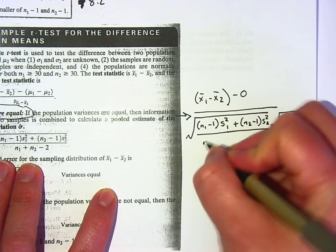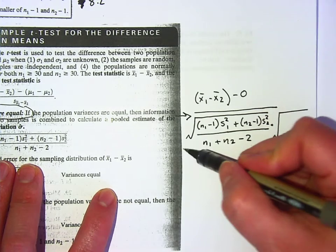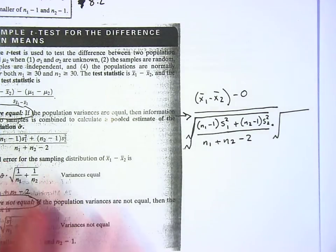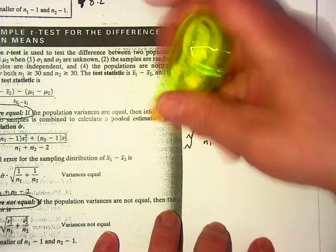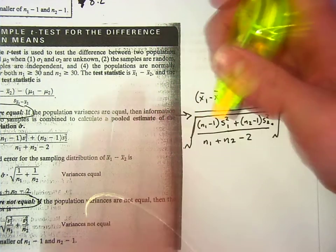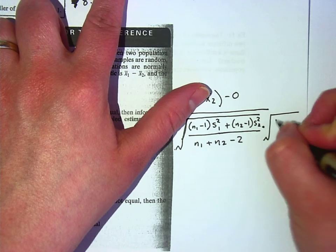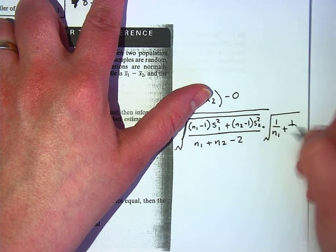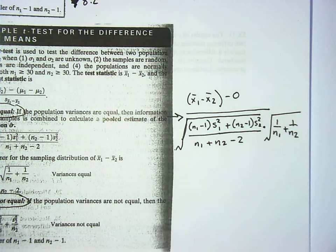First one is n1 minus 1 times s squared sub 1 plus n sub 2 minus 1 times s squared sub 2. On the bottom is n1 plus n2 minus 2. Yeah, I know, it's chaotic. This is the biggest formula we have. Again, David, if you want to figure out how to prove it and come show me, that'd be cool. But I think this one's a bit beyond me. And then we multiply it by this, which is 1 over n sub 1 plus 1 over n sub 2. And that's if the variances are equal.